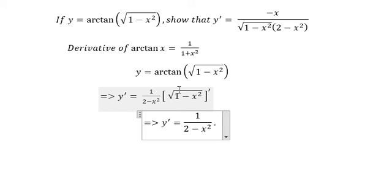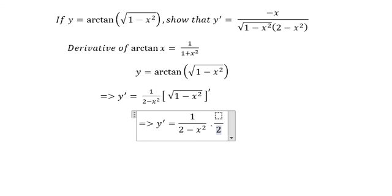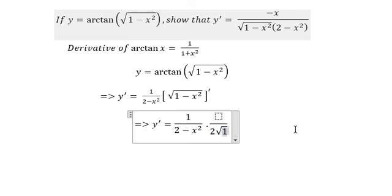The first derivative of square root 1 minus x squared gives us 1 over 2 multiplied with square root 1 minus x squared.